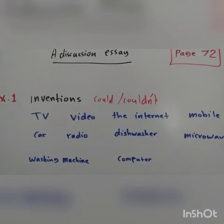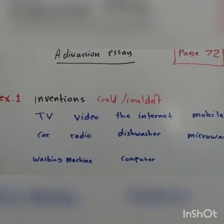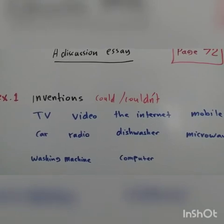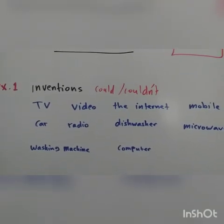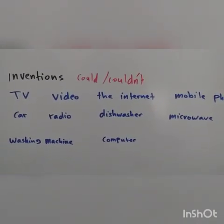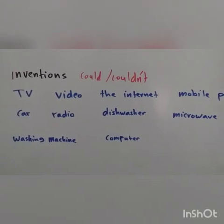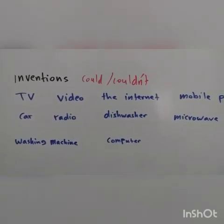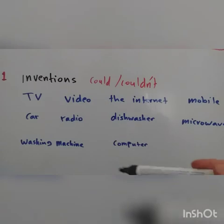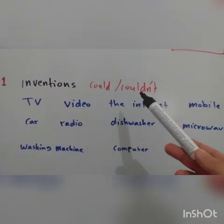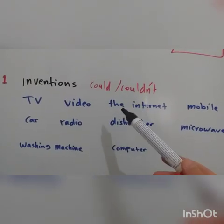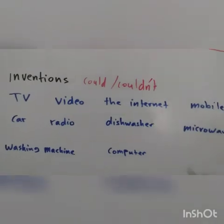Before we move on and learn how to write a discussion essay, let's look at the first exercise. In the first exercise, you have inventions in the yellow books. They are TV, video, the internet, mobile phone, car, radio, dishwasher, microwave, washing machine, and computer. The idea is that you write sentences using could and couldn't — three things that you could live without and three things that you couldn't live without. So let's give an example.